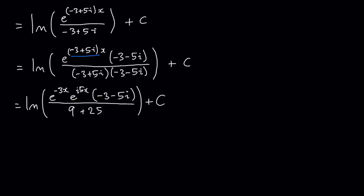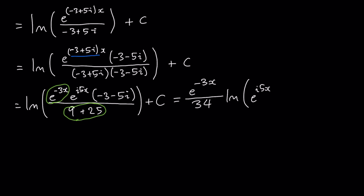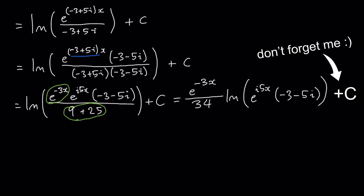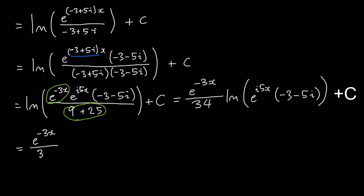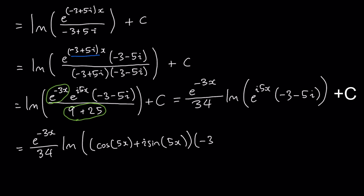Now this term and the denominator are both purely real, so I can pull them out of this imaginary component function. So I get e to the negative 3x over 34 times the imaginary component of e to the i5x times minus 3 minus 5i. Now I'm going to use that trigonometric form of the complex exponential again to rewrite that as the imaginary component of cos 5x plus i sine 5x times minus 3 minus 5i.